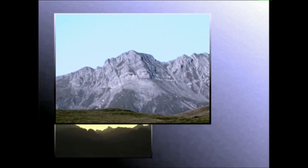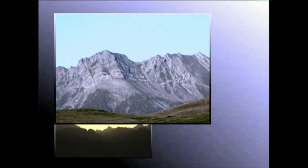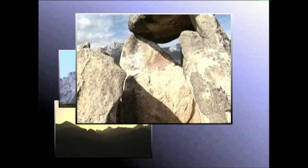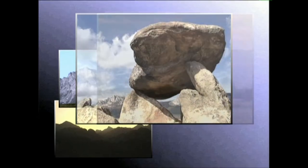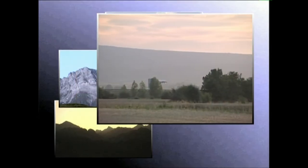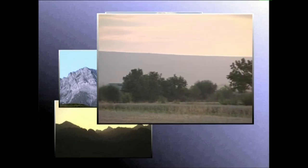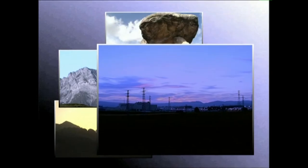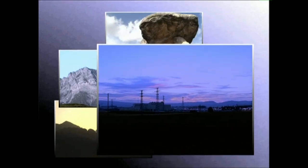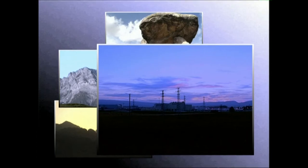Egun eguzkitsuetan, egun sentiak tonu laranja lehunak izaten ditu. Goizaldeak tonu urdinskak. Eguerdian, kolore guztiak distira handiarekin ikusten dira. Arratsean, tonu laranja indartsuenek dena koloreztatzen dute. Iluntzean, izartegian tonu urdin indartsuan zehatzen da — sorgin ordua deitzen zaio.